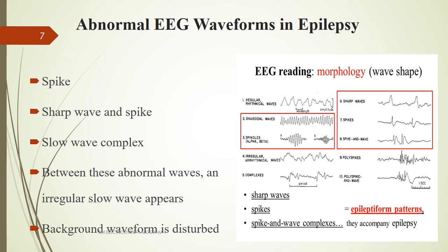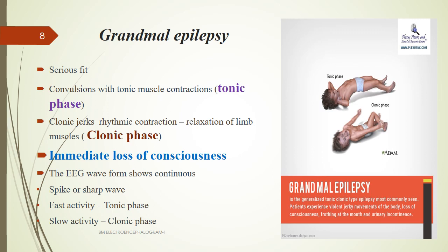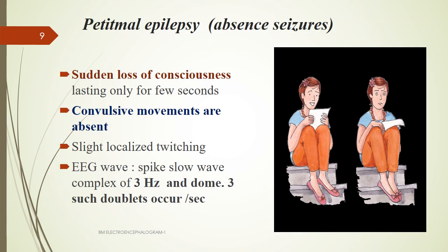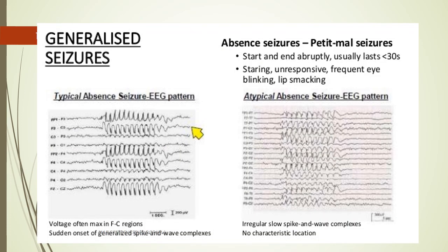Grand mal epilepsy is a very serious fit: convulsions with tonic muscle contractions and relaxations occur, called the tonic phase and clonic phase, with immediate loss of consciousness. The EEG will show sharp spike waves. Petit mal epilepsy, or absence seizures, involves sudden loss of consciousness lasting only a few seconds; convulsive movements are absent, though localized twitchings can occur. The EEG will show dome-and-spike patterns.